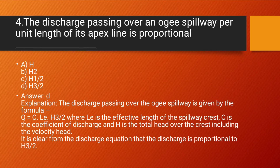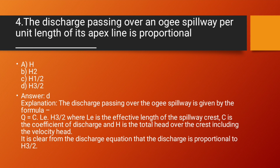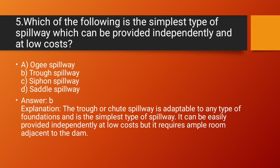Answer: Option D. Explanation: The discharge passing over the Ogee spillway is given by the formula Q = C × Le × H^(3/2), where Le is the effective length of the spillway crest, C is the coefficient of discharge, and H is the total head over the crest including the velocity head. It is clear from the discharge equation that the discharge is proportional to H to the power 3/2.